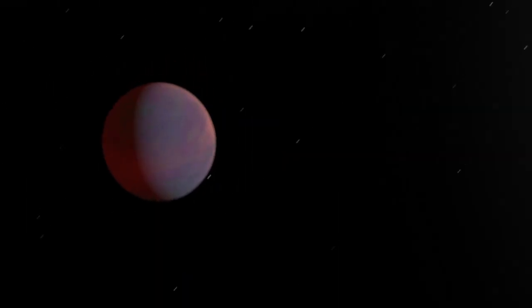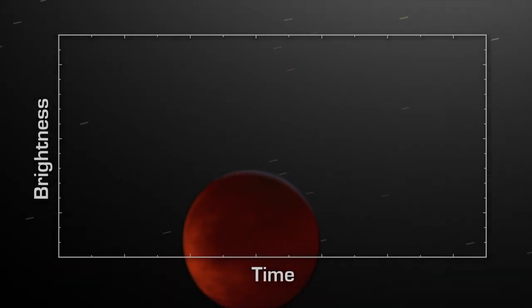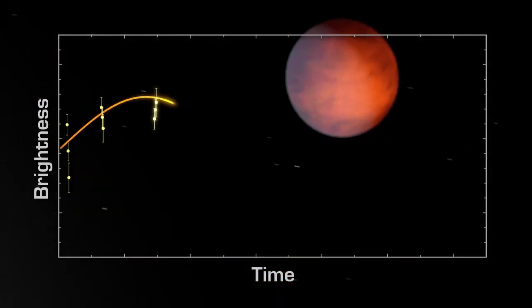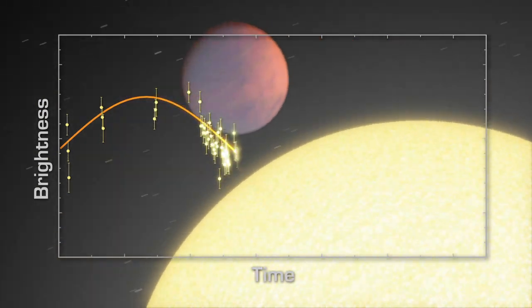Astronomers using NASA's Spitzer Space Telescope measured how the infrared light of the system changes as the planet circles its star. When it's brightest, we're seeing the hottest part of the planet.